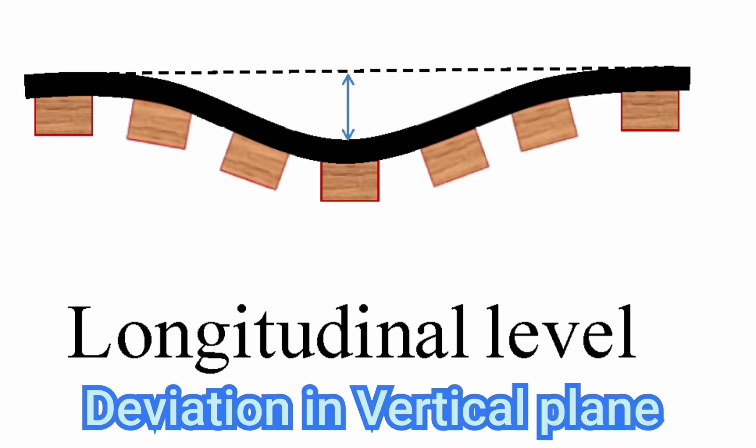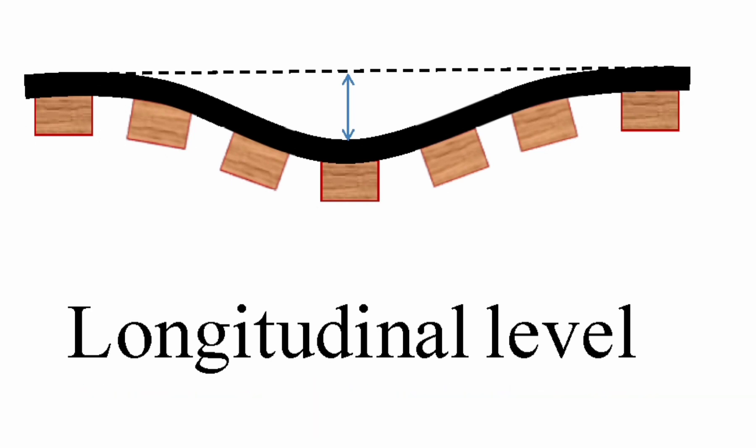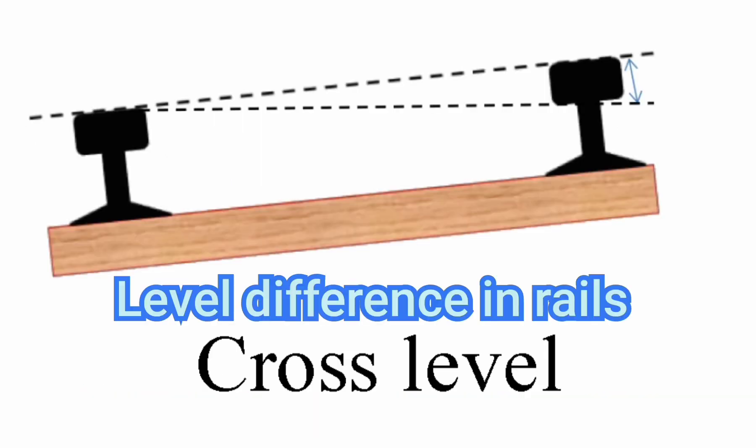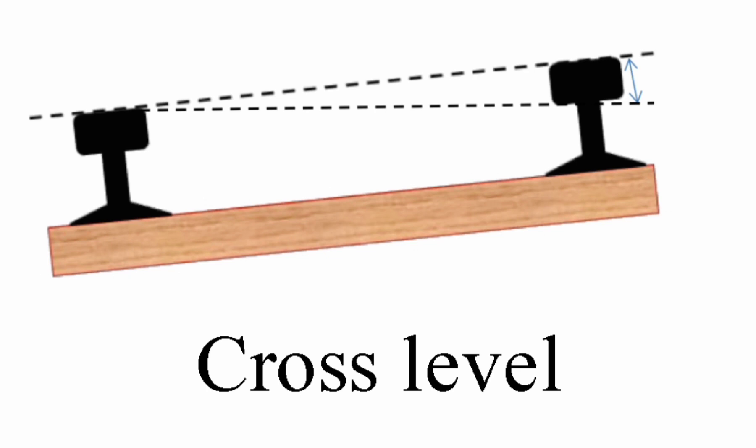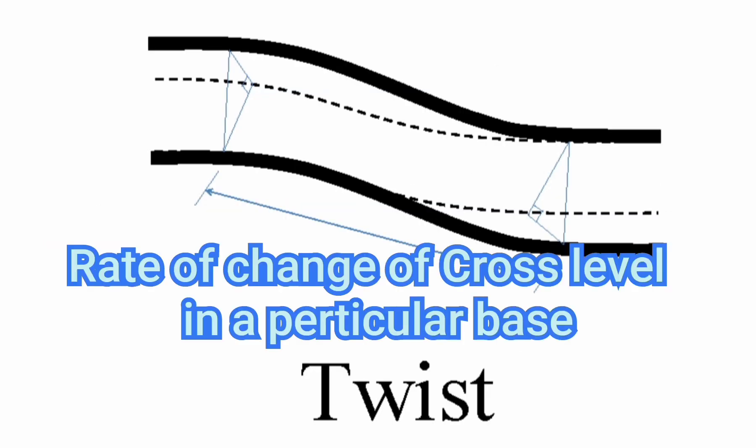Unevenness is irregularity or deviation in the vertical plane. Cross level is the rail level difference at the same sleeper, also called super elevation or cant. Twist is variation in cross levels over a particular base.